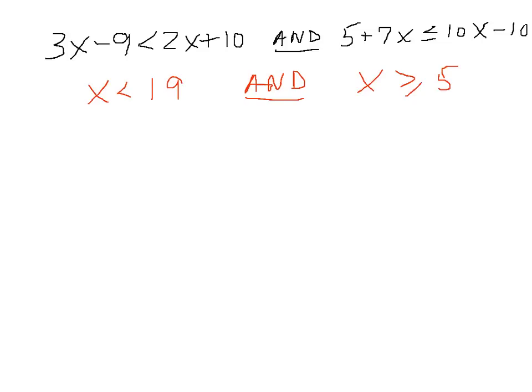So what this is saying is the solution is any value which is less than 19 and greater than or equal to 5. So if I graph this, here's 0, here's 5, here's 19.